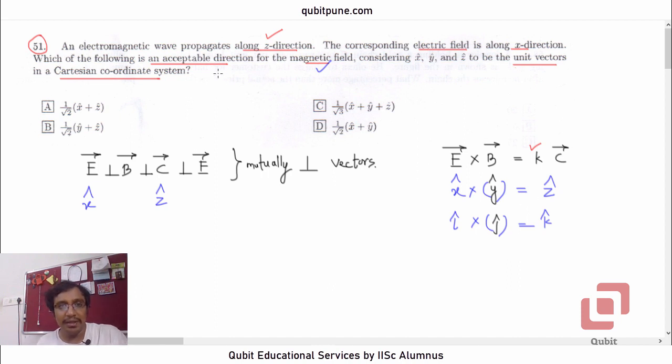The correct option, or an acceptable direction for the magnetic field, is Y cap. That is question number 51.